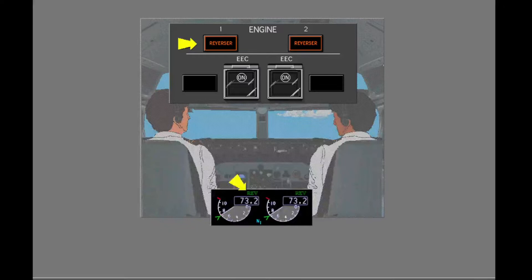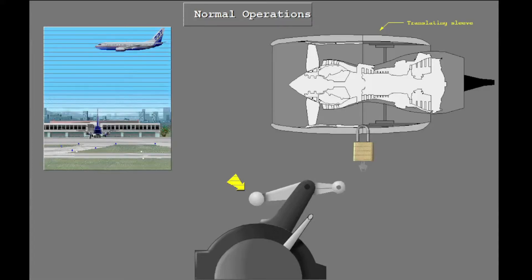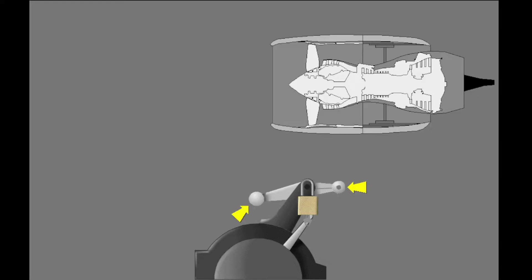There are two thrust reverser system indicators: the reverser light on the engine panel and the reverser indication above the N1 indications. During pre-flight and normal in-flight operations, the reverse thrust levers are in the full down or stowed position. In this position, the translating sleeves are stowed and locked. A mechanical interlock in the thrust lever assembly prevents movement of the forward and reverse thrust levers at the same time. The forward thrust levers must be in the idle position before the reverse thrust levers can be moved.